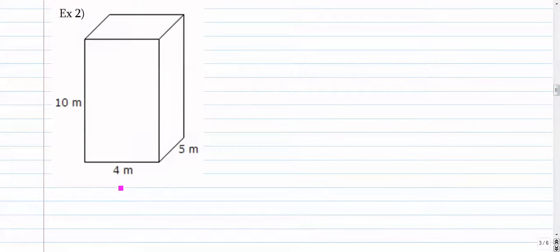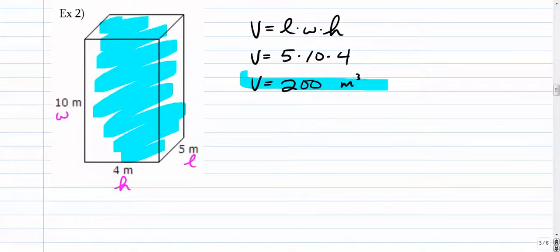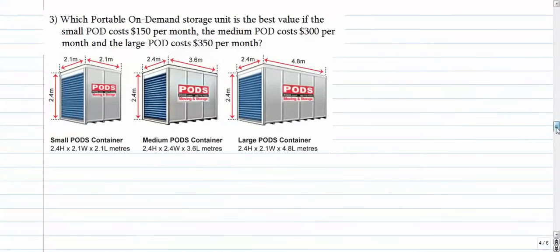So for this one, let's call this the height, that's the length, and this is the width. Makes no difference which one you call L, which one you call W, or which one you call H. So this is 200 cubic meters. That's how much space is on the inside. And if you were to fill this with water, that's how much water you would need. Alright, so those are simple enough. But let's get into some more application problems.